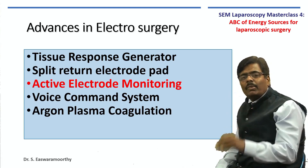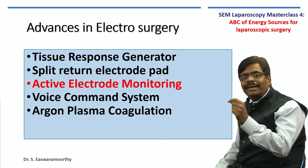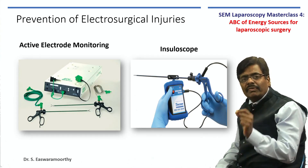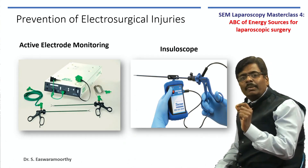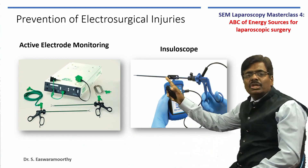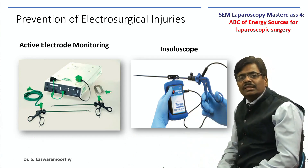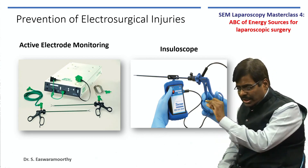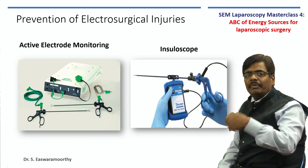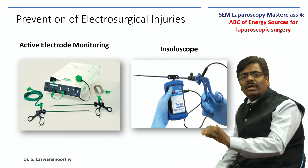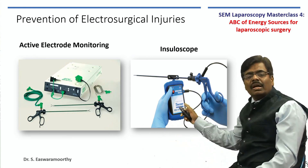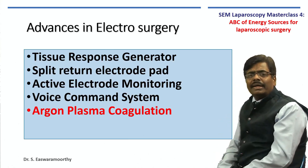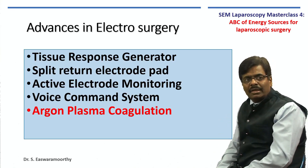There are also gadgets available to monitor the active electrode for insulation damage — equipment like active electrode monitoring devices or insuloscopes that emit a beep whenever there is a breach in insulation. These are very valuable. However, as mentioned earlier, a simple magnifying glass used to carefully inspect every sheath before sending instruments for sterilization is good enough in most settings where high-end gadgets may not be affordable.